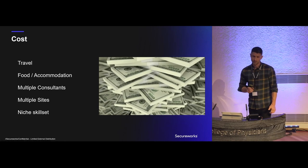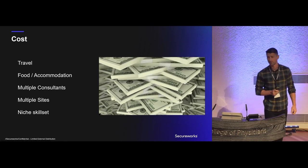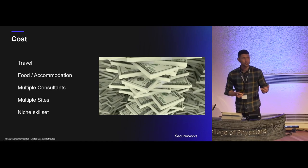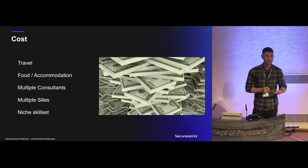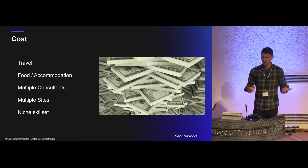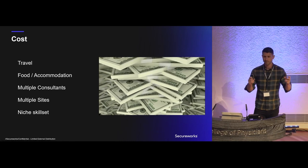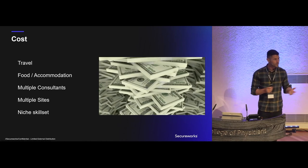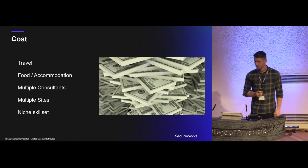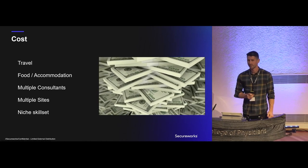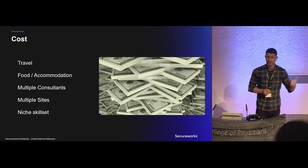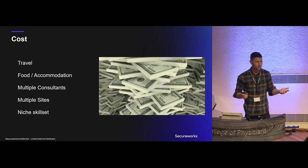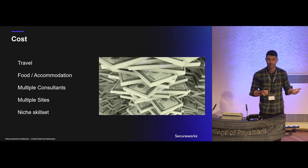The fourth reason is cost. It costs a lot — you have to travel to site, pay for food and accommodation, and generally require multiple consultants. It's essentially a physical red team, so at least two people. And when you have multiple sites, do you target headquarters, satellite offices, or every single site? That gets very expensive. Finally, it's a niche skill set. People who do physical intrusions need a penetration testing background to target digital assets, but also knowledge of physical security — typically learned in the army or police forces.